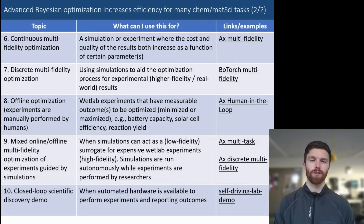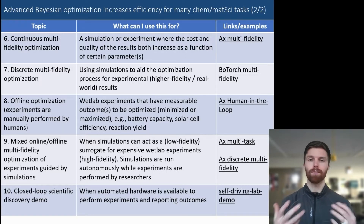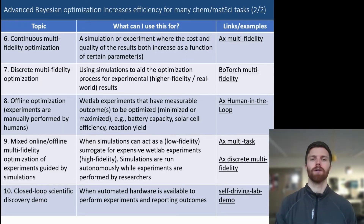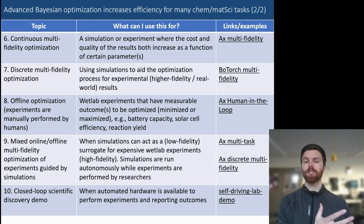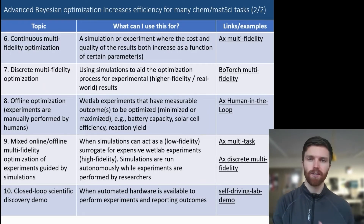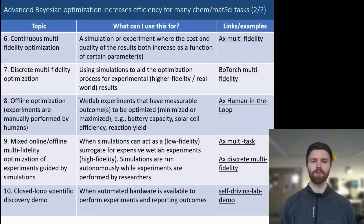We took a look at doing offline optimization, where the experiments are manually performed by people. You can attach any existing data that you have, suggest the next experiment, report that back manually, and repeat that loop.